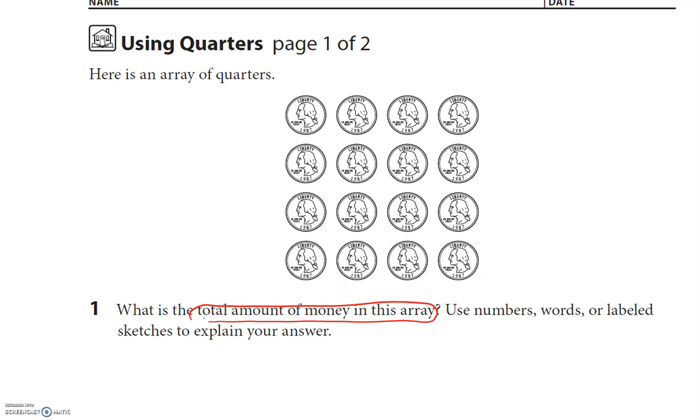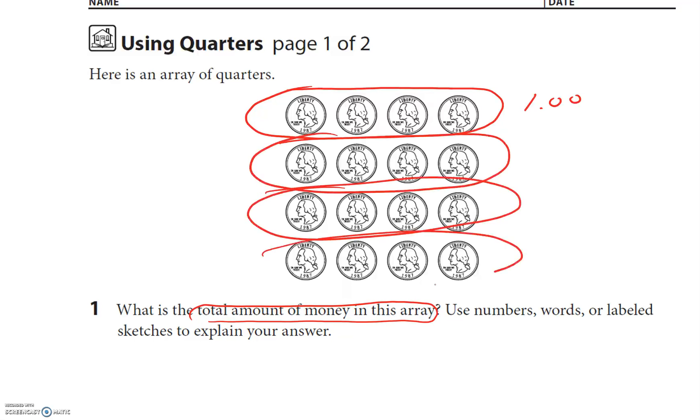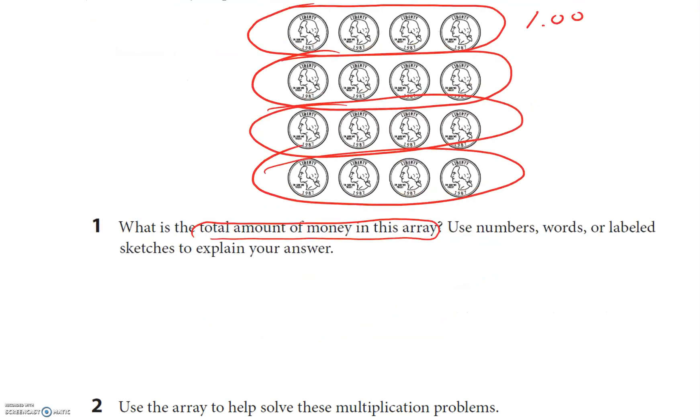There's different ways and I'm gonna show you how I'm gonna count it up. So I know that there are four in a dollar and there are four sets of four, so I'm not doing any multiplication except basically one times four, and I believe there's four dollars there.